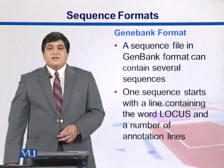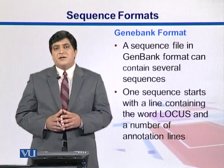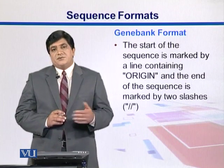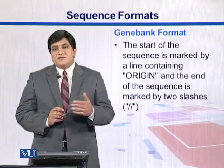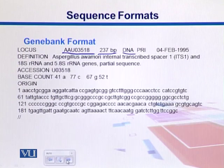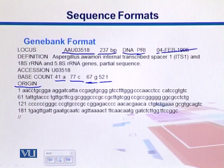GenBank is the format used in the GenBank database and is a kind of standard format. In GenBank, records start with the word 'LOCUS,' followed by description lines. Sequences start with the word 'ORIGIN' and end with double-slash signs. Here is an example: we start with LOCUS and its ID, 237 base pairs. There are short descriptions — it's DNA, a primary sequence, with a submission date. We have a definition line, accession number, and base counts showing how many A's, C's, G's, and T's are in the sequence. The word ORIGIN signals that the actual sequence follows, with 60 bases per line split into chunks of 10.